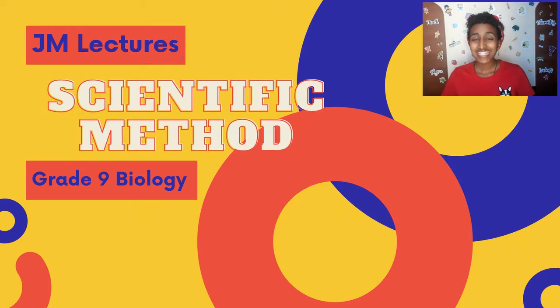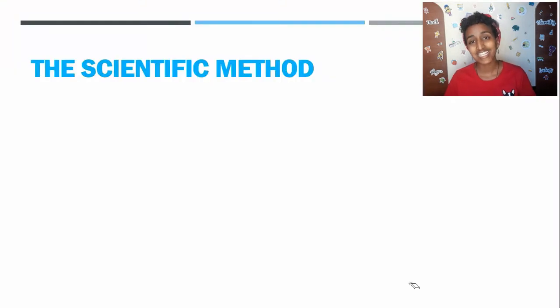Welcome back to JM Lectures. This is the second part of the bonus unit of the first unit of grade nine biology, the scientific method. The scientific method can be summed up in seven simple steps of science. It's not just biology, it's also used in physics and chemistry.